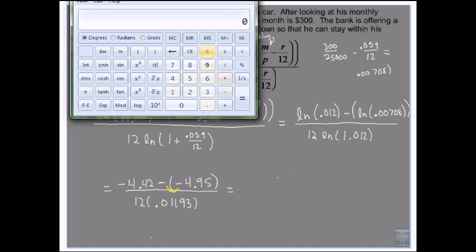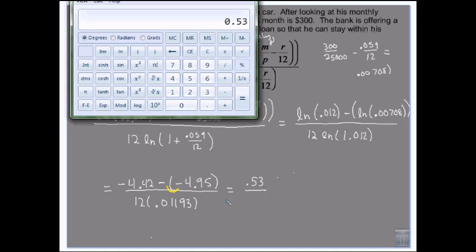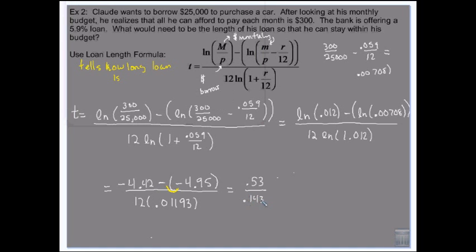So I have 4.95 minus 4.42. Or negative 4.42 plus 4.95. Either way, you get 53 cents. And then 12 times 0.1193 times 12, 0.14316.